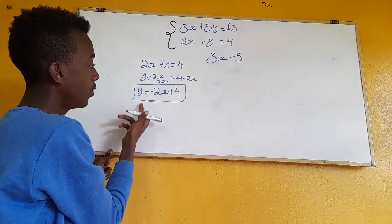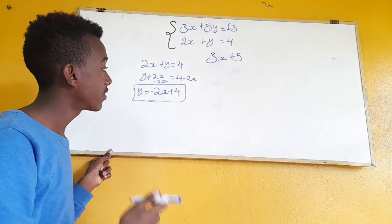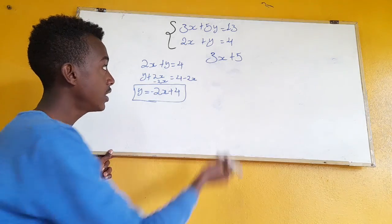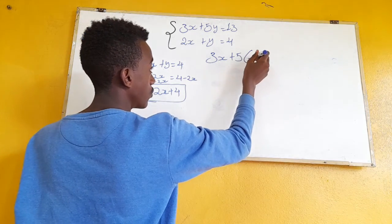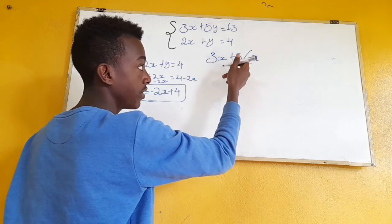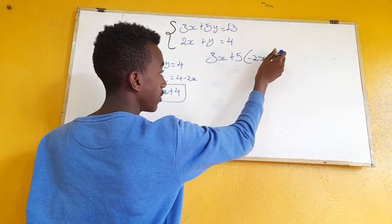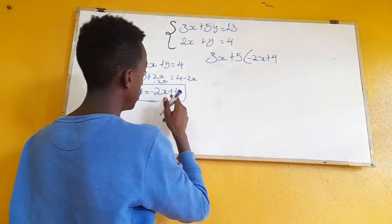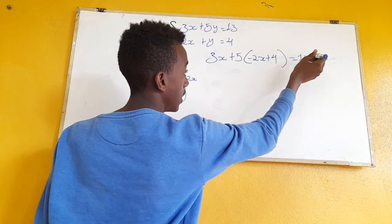x plus y is equal to 4x minus 2x plus 4, minus 2y. Then 5 times minus 2x plus 4 is equal to 13.